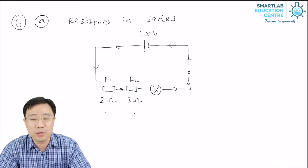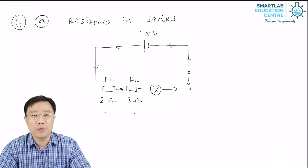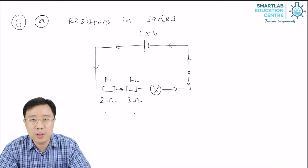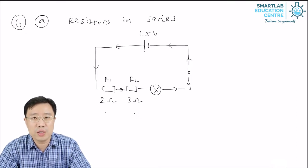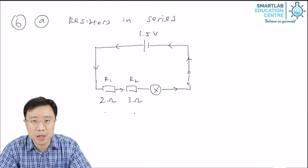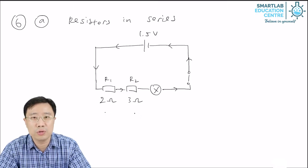Now, so R1 and R2 are arranged in series. For resistors arranged in series, their total resistance is just the sum of the individual resistance.